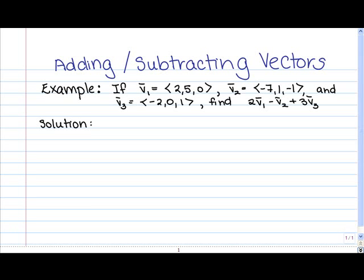In this example, we're given three vectors: v1, which is (2, 5, 0); v2, which is (-7, 1, -1); and v3, which is (-2, 0, 1). We're asked to find the vector combination 2v1 minus v2 plus 3v3.